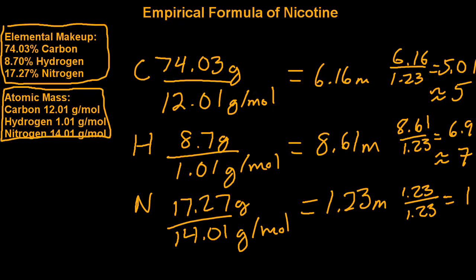So for empirical formulas, when you get values very close to a whole number, it's usually okay just to round up or round down accordingly. So in this case, our empirical formula will be C5H7N.